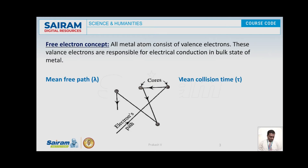First, let us take up what is free electron theory concept. As according to classical free electron theory or Drude-Lorentz theory, a matter is supposed to consist of positive metal ions fixed in their respective mean positions, whose valence electrons move freely within the boundaries of the metal and collide with each other and also with the lattice points. These free electrons are responsible for the conduction of electricity and hence they are called conduction electrons.